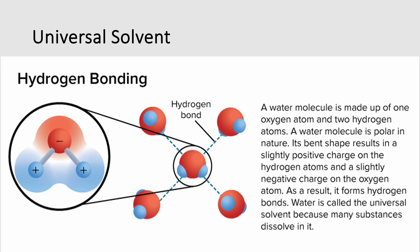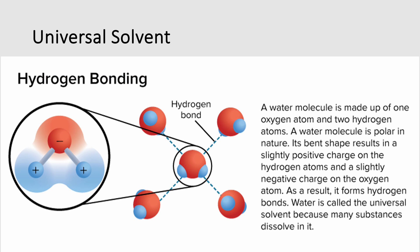The first unique property is hydrogen bonding. A water molecule (H2O) is polar and bent in shape, resulting in a slightly positive charge on the hydrogen atoms and a slightly negative charge on the oxygen atom. As a result, water forms hydrogen bonds and is called the universal solvent because it can dissolve so many different substances. These slightly positive and negative charges surround things like sugar and salt, incorporating them into the water.